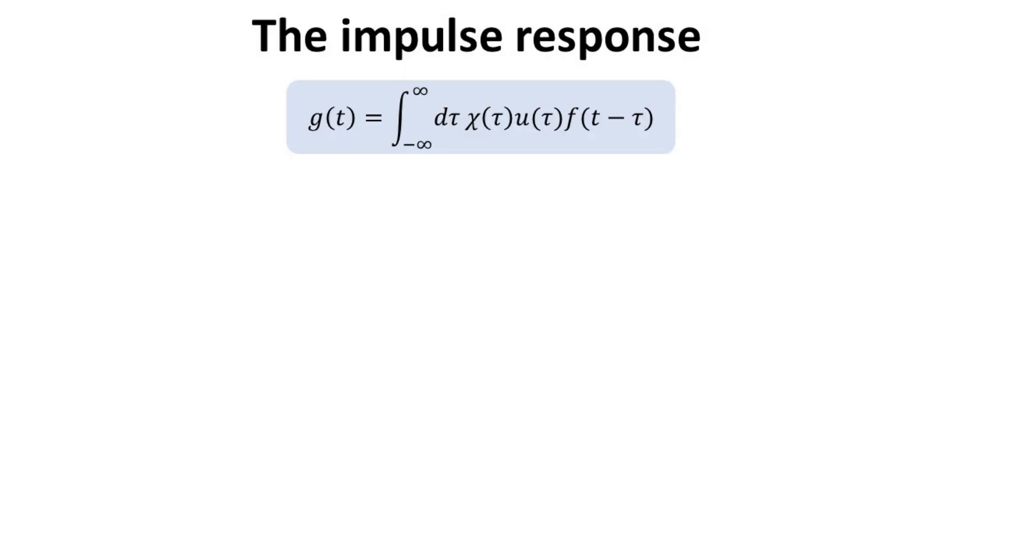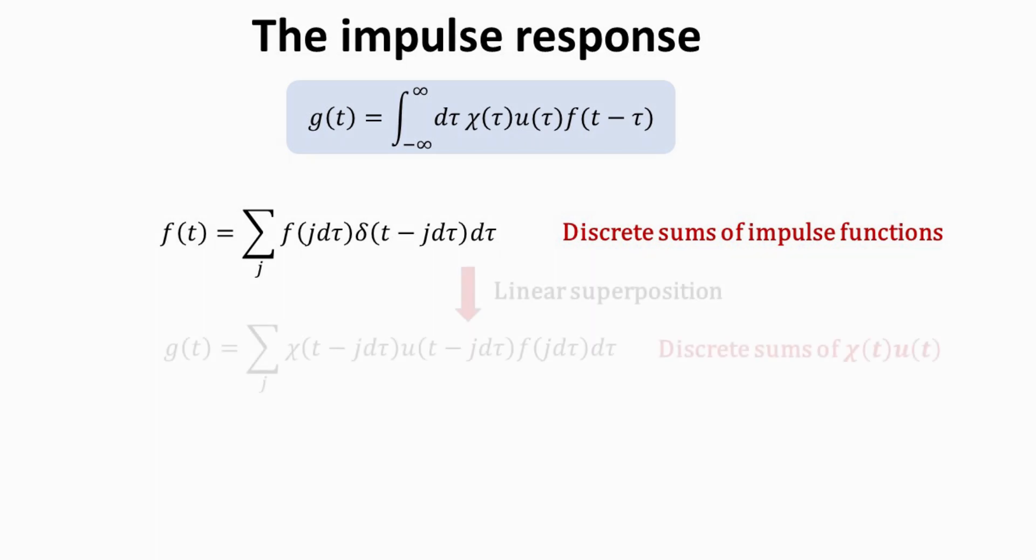Having established that chi is the response function of the system, how can we intuitively understand why the output Gt would be given by the convolution of F with chi, as shown? Given a general input Ft, we can always deconstruct it in terms of discrete sum of impulse functions, whose weights at each infinitesimal time step is given by its corresponding F value at that time step.